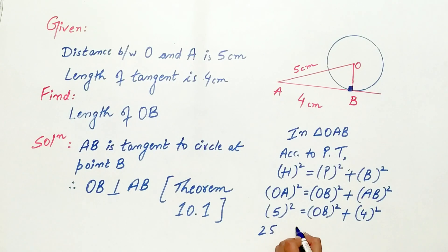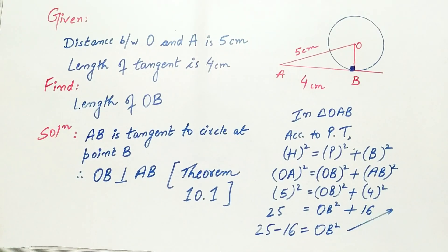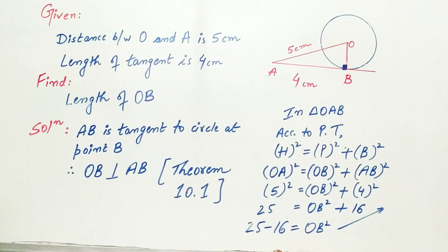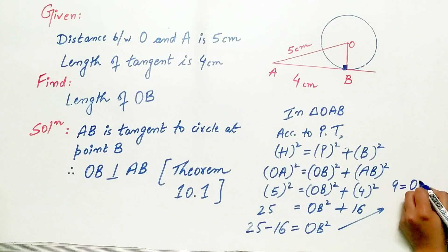5 square is 25 is equal to OB square plus 4 square is 16. 25 minus 16 is 9. 9 is equal to OB square.